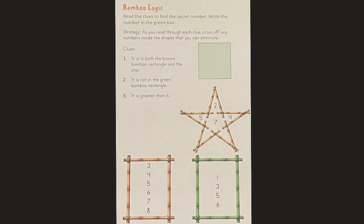So here's the first clue. It is in both the brown bamboo rectangle and the star. So then the mystery number is in this rectangle and this star. So think about which numbers are in both. It is not in the green bamboo rectangle. So these numbers are not it.